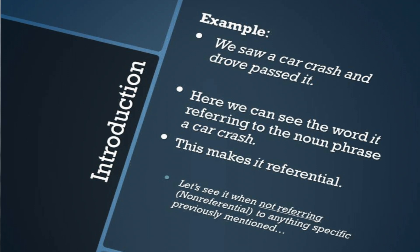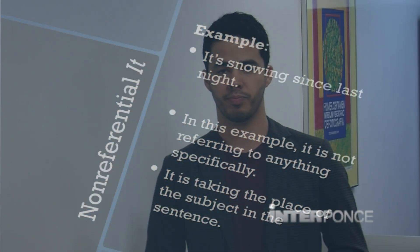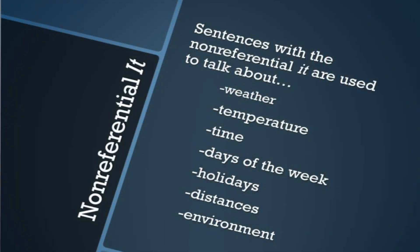Now let's see when it is not referring to anything specific previously mentioned. In the next example, 'it's snowed since last night' — it is not referring to anything specific. It is actually taking the place of the subject in the sentence. It has no meaning by itself. Sentences with a non-referential it are used to talk about weather, temperature, time, days of the week, holidays, distances, and environment.